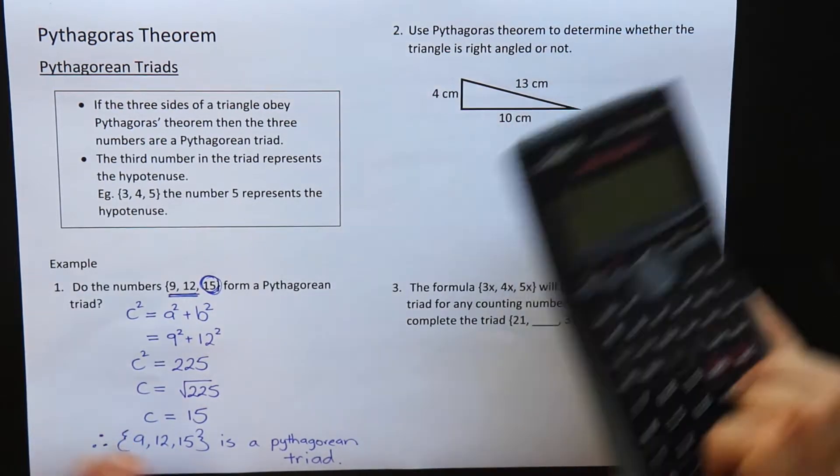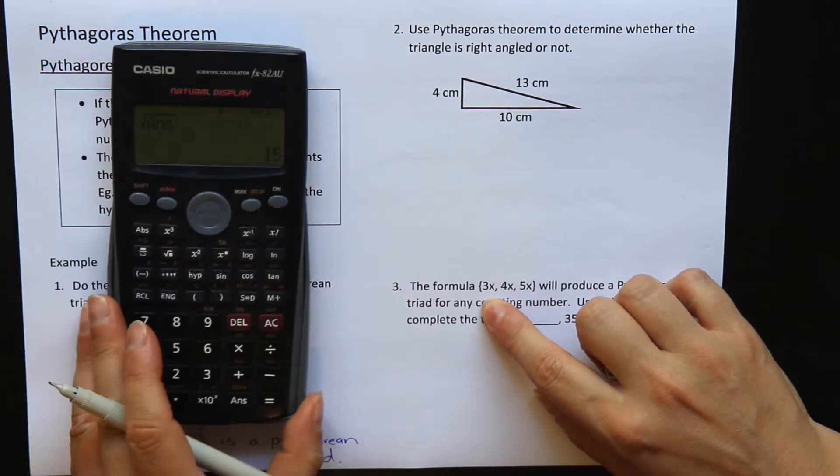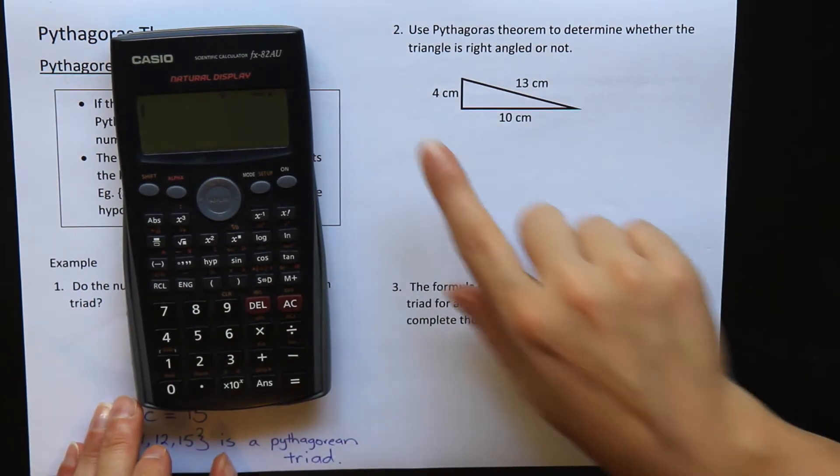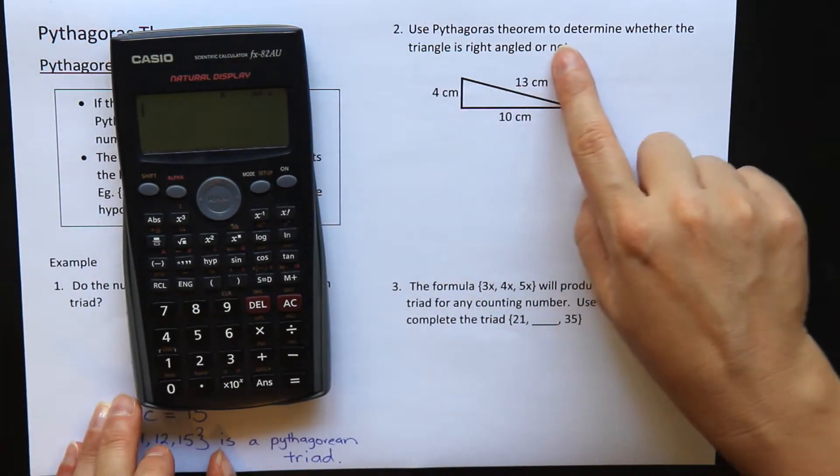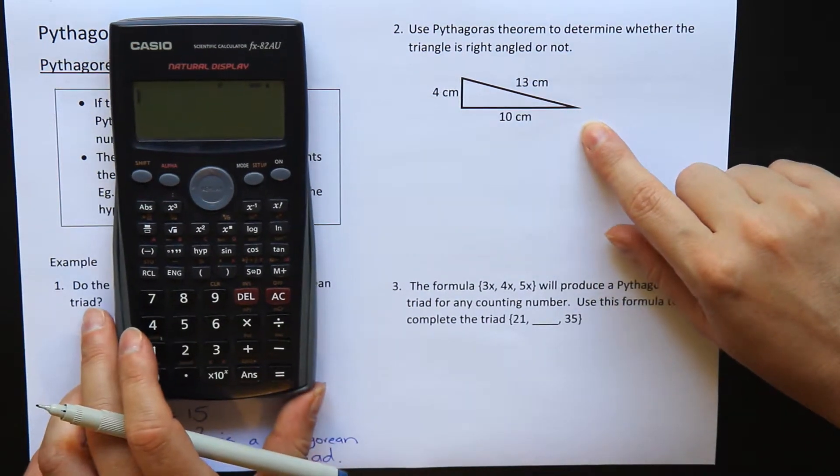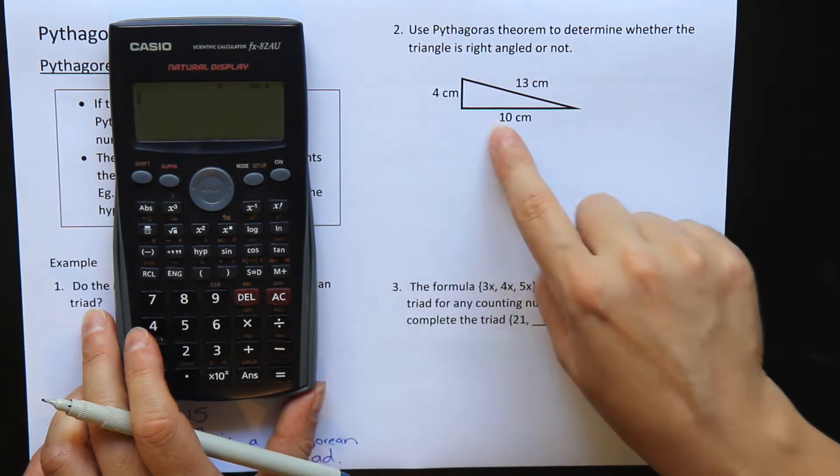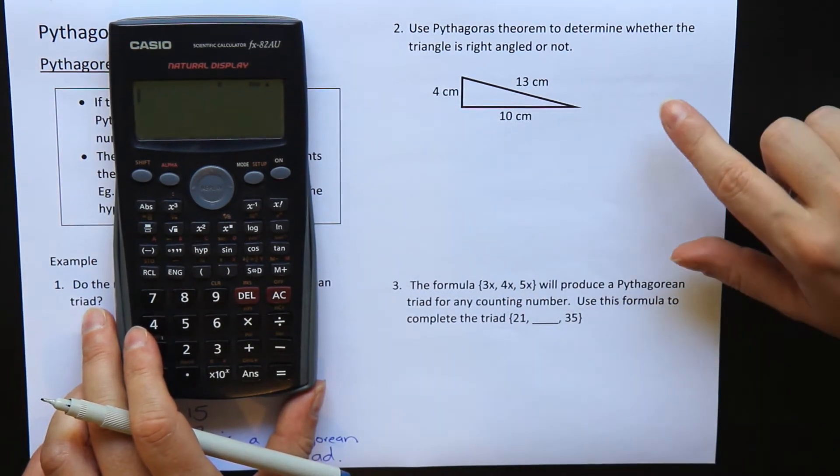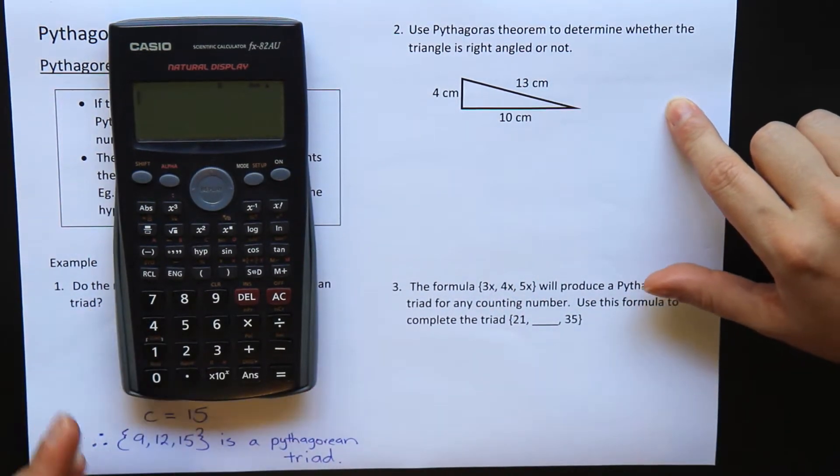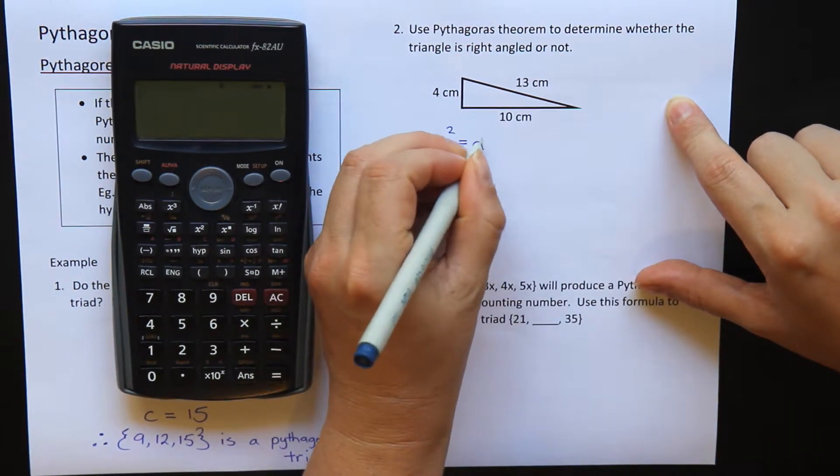All right, let's do it again. This time instead of having the brackets, I have a triangle, but the question is still the same. Use Pythagoras' Theorem to determine whether the triangle is right angled or not. If it's a right angle, then I should be able to use the two smaller sides and I should get the third larger side. So let's do c squared equals a squared plus b squared.